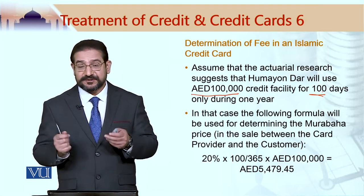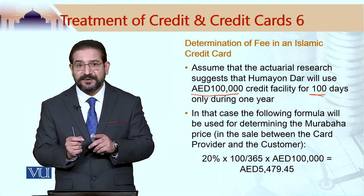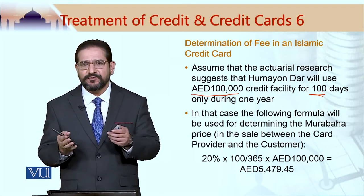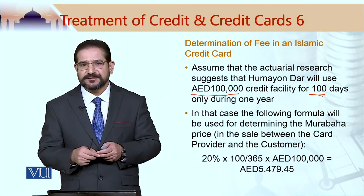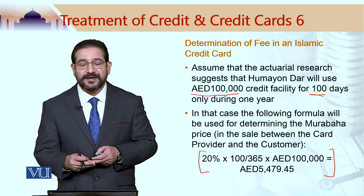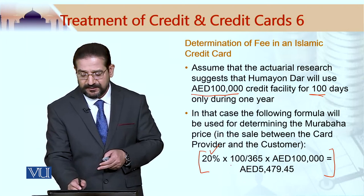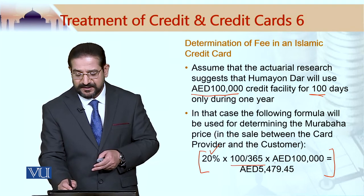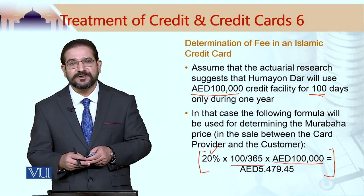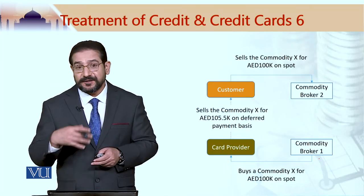If a person called Humayudar applies for a credit card and the research company comes back saying this person is going to utilize 100,000 dirhams worth of credit facility for 100 days over a period of 365 days, then using this formula — if 20% is the return the credit card provider is looking for — they would apply: 20% multiplied by 100 divided by 365, multiplied by 100,000 dirhams. That would give the murabaha price of 5,479.45 dirhams, which would be used in the tawarruq transaction.